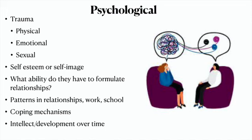Psychologically, it's primarily about the person's view of themselves and the world. Important areas to assess include trauma history — any physical, emotional, or sexual abuse that can affect their psychological makeup — self-esteem and self-image issues, and their ability to form relationships. Look for patterns in relationships, work, or school that are impaired or repeat over time, which could suggest something psychological. Also assess their coping mechanisms: do they use healthy strategies like support systems or reading, or unhealthy ones like drugs, aggression, or self-harm?